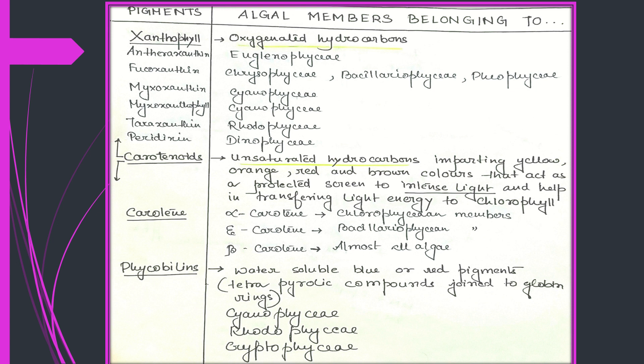Finally, we come to phycobilins. These phycobilins are water-soluble blue or red pigments. They are tetrapyrolic compounds joined to globin rings. They are found in members of Cyanophyceae, Rhodophyceae, and Cryptophyceae.